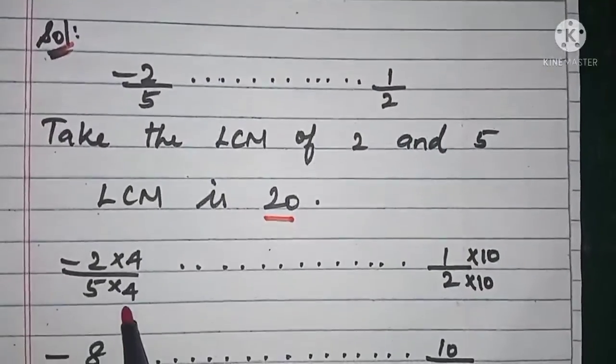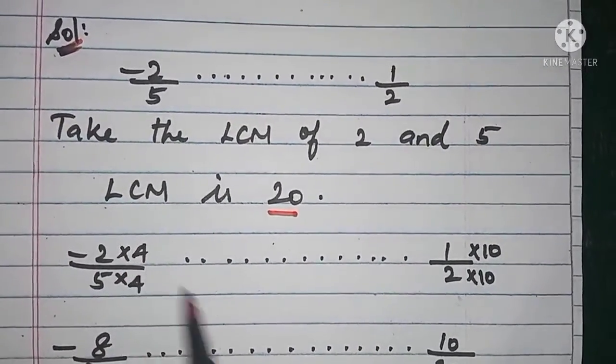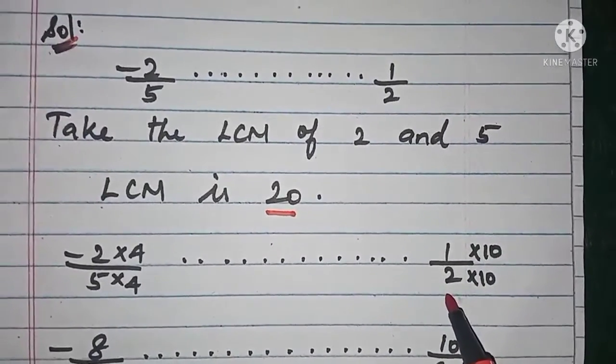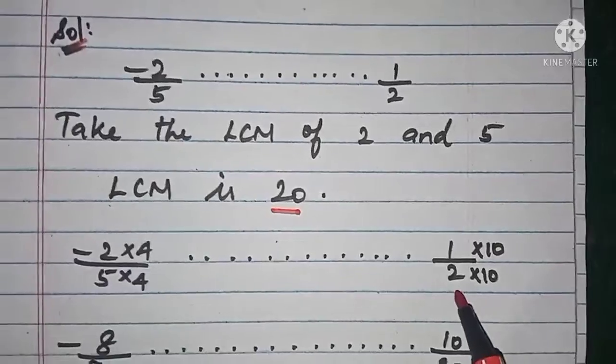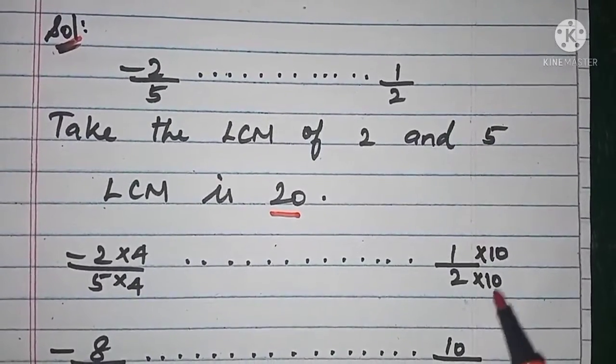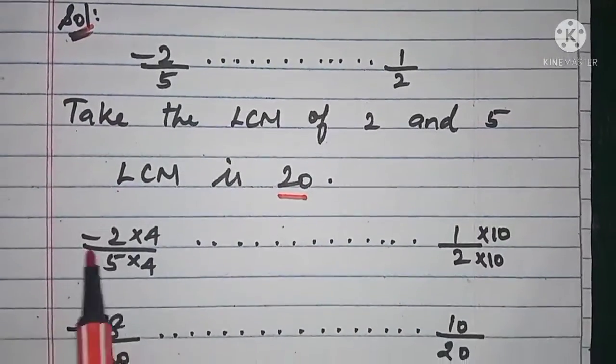In the same way, the numerator also you have to multiply by 4. Then come to the last number. The denominator 2 should be changed to 20, for that you have to multiply numerator and denominator by 10.